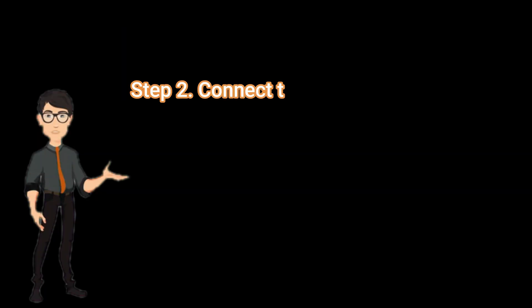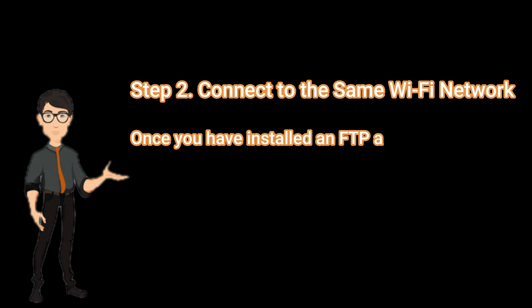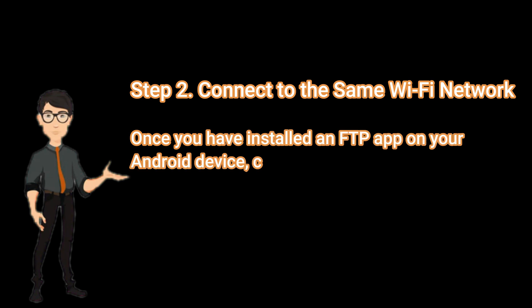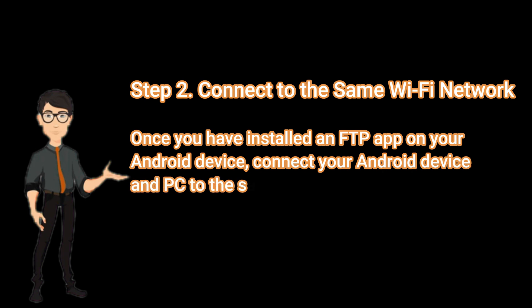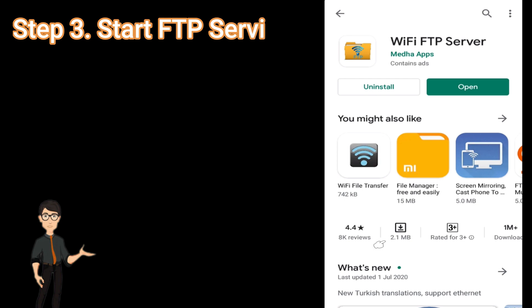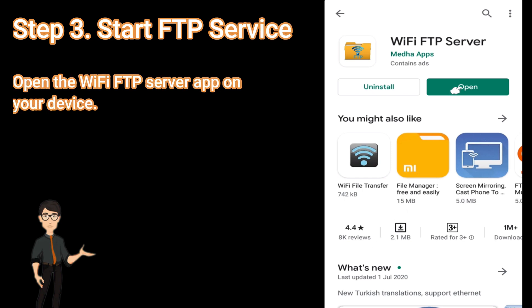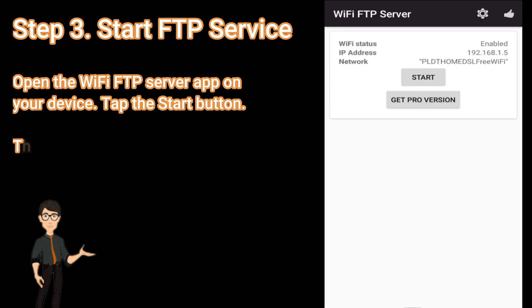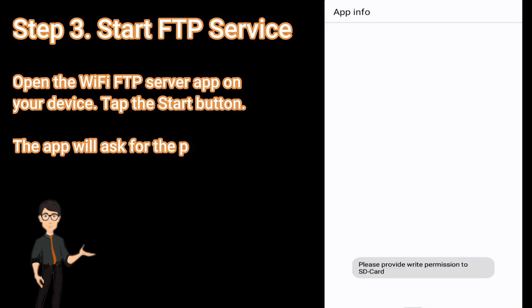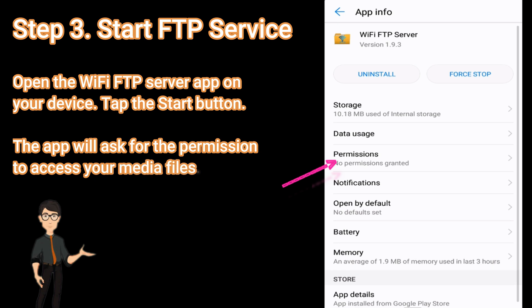Step 2: Connect to the same Wi-Fi network. Once you have installed an FTP app on your Android device, connect your Android device and PC to the same Wi-Fi network. Step 3: Start FTP service. Open the Wi-Fi FTP Server app on your device and tap the Start button. The app will ask for permission to access your media files — grant it the necessary permission.